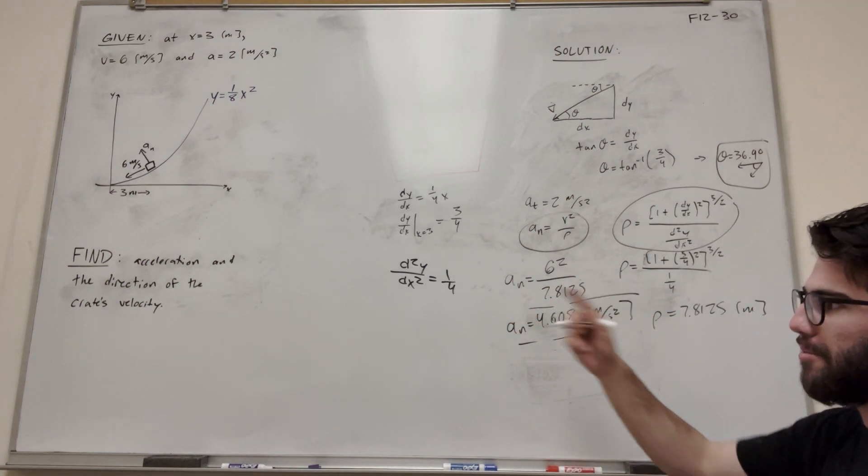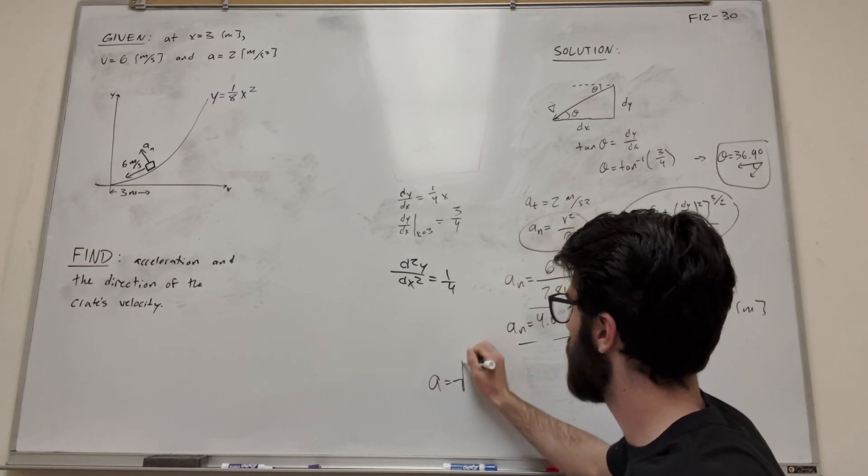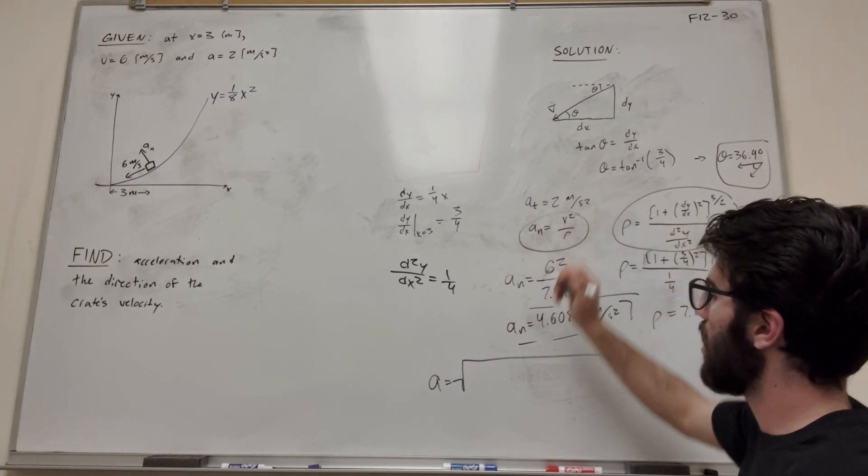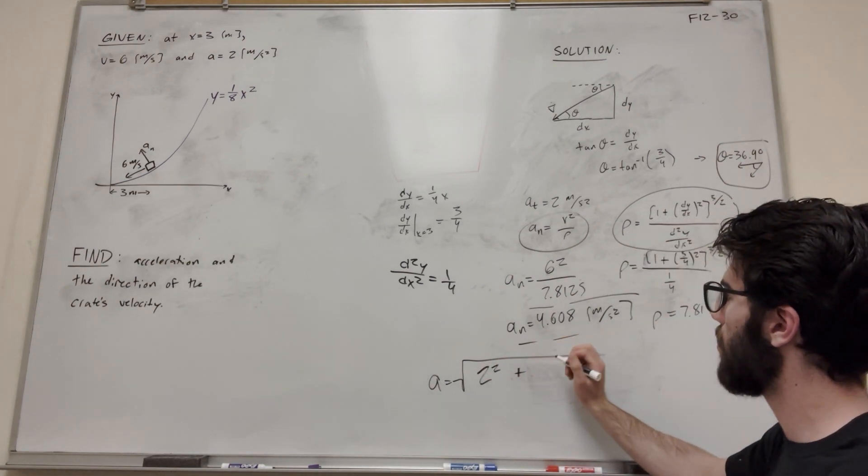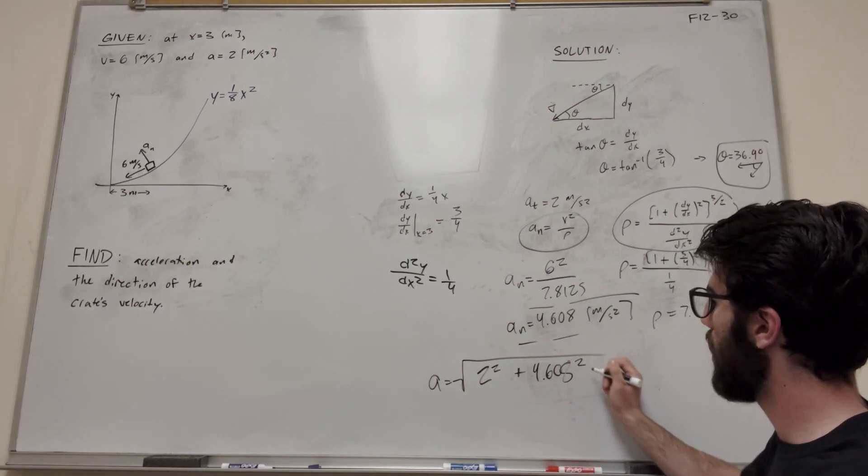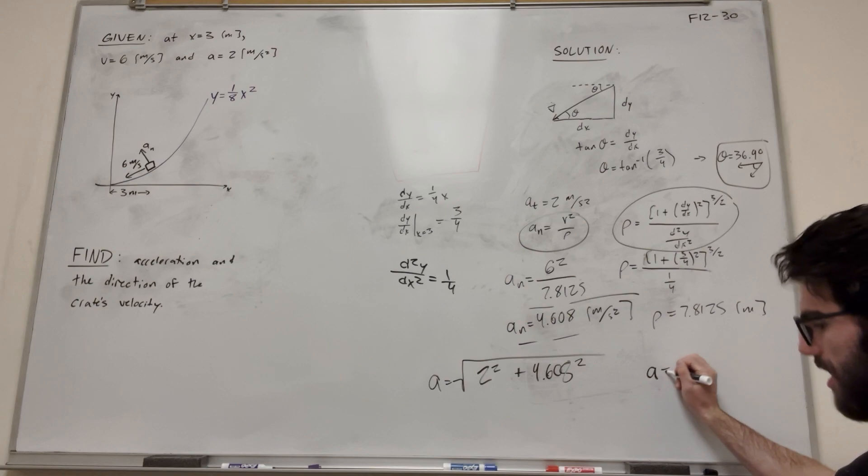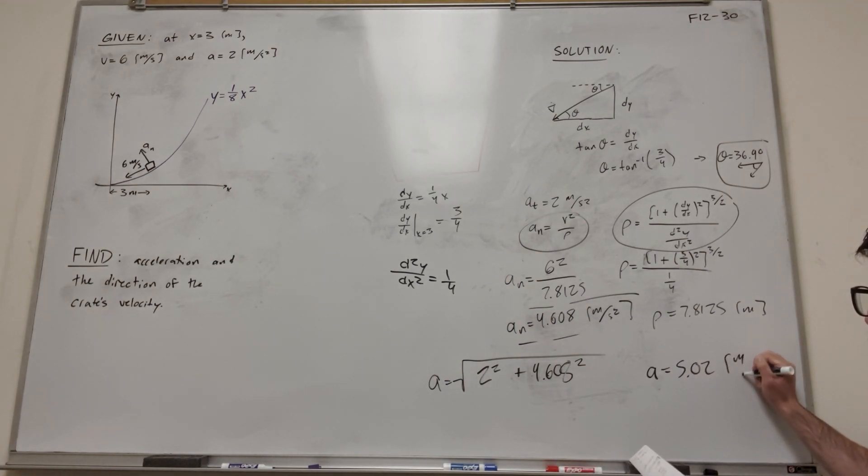So that's not what we're solving for. We need the magnitude of the acceleration. So if we want to find the magnitude of the acceleration, we're just going to take the square root of the acceleration tangent squared, so 2 squared plus the acceleration normal squared, 4.608 squared, and then you get that acceleration is 5.02 meters per second squared.